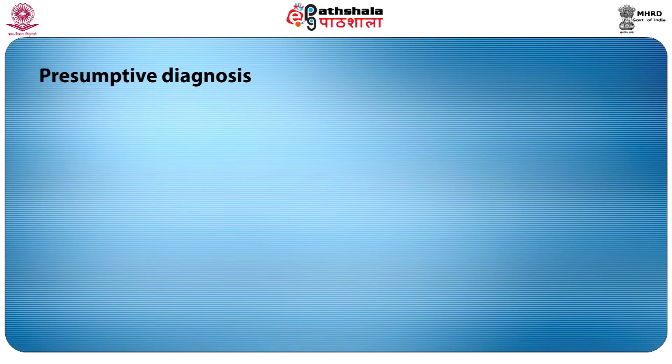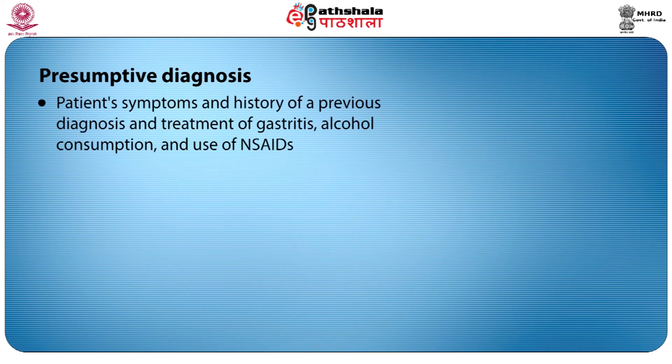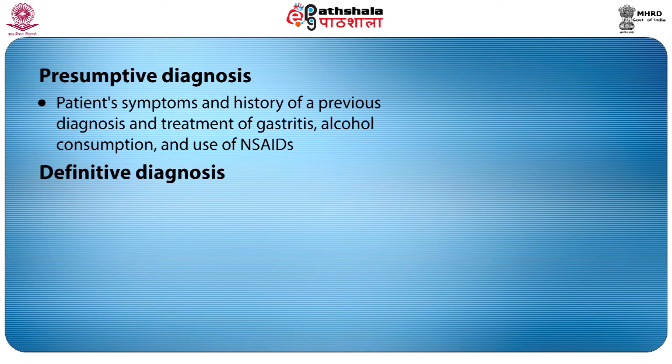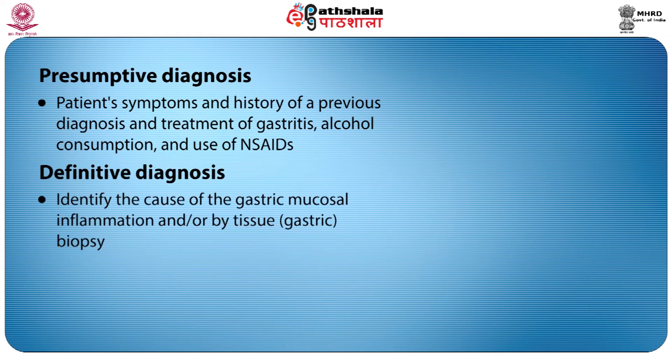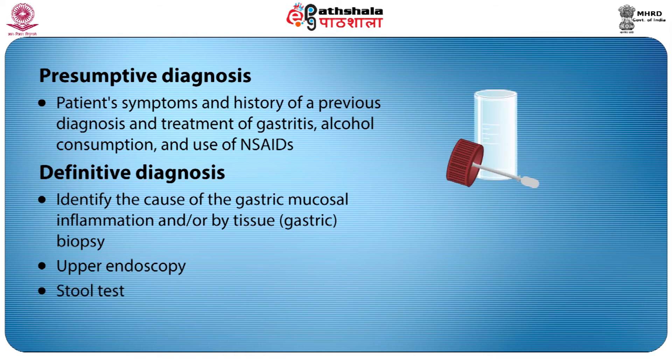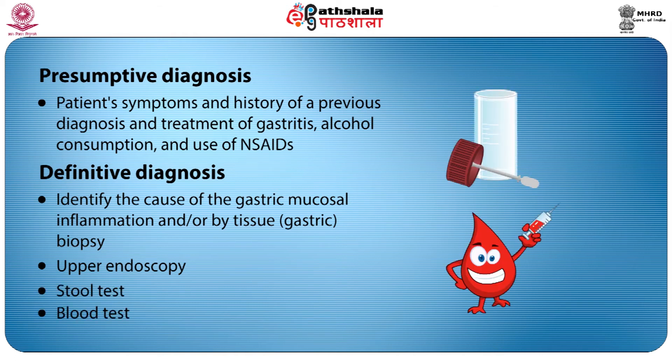Diagnosis can begin with a presumptive diagnosis based on the patient's symptoms, history of previous diagnosis and treatment of gastritis, alcohol ingestion, and use of non-steroidal anti-inflammatory drugs. Following presumptive diagnosis, tissue biopsy test, upper endoscopy, stool test, and breath test are undertaken to diagnose the presence of gastritis. All these diagnosis methods were already discussed clearly in the previous module on peptic ulcer.